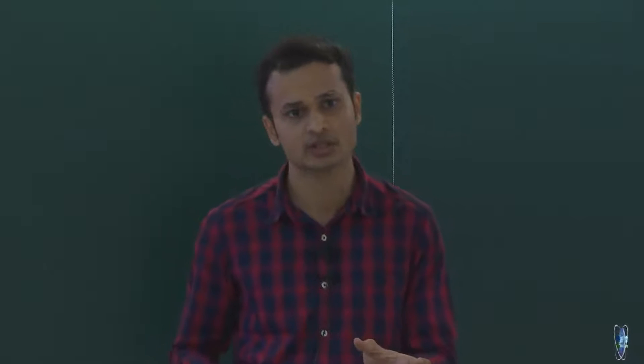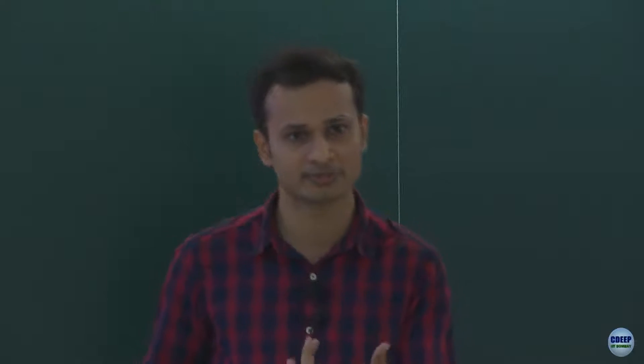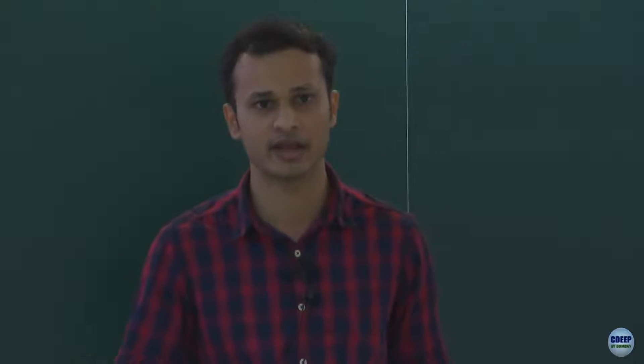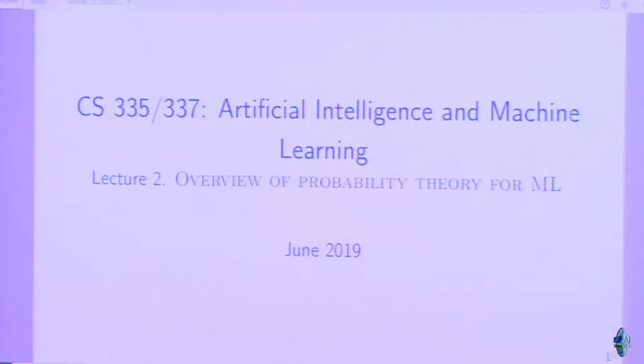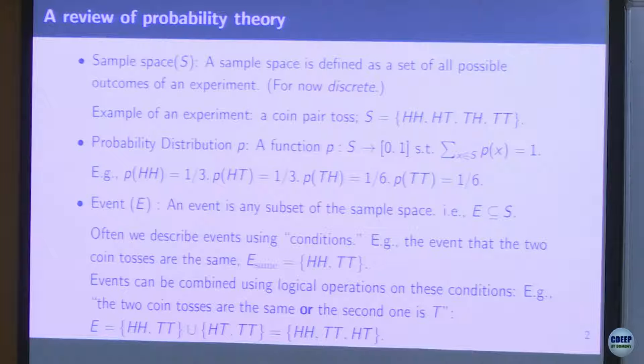An event is actually a subset of all the possible sample space. For example, in our coin toss experiment, it can be the event that head has occurred, or if we are tossing 2 coins, the event that 2 heads are occurring. An event can also be a union of 2 events — like the 2 coin tosses are the same, or the second one is tail, so the union will make 3 events.